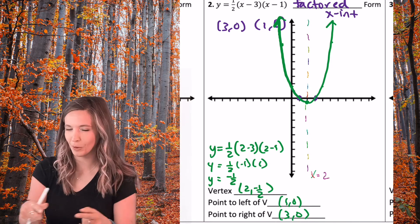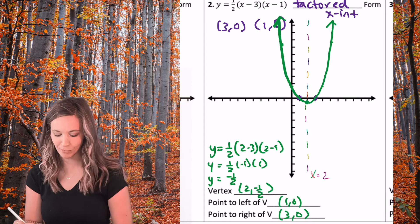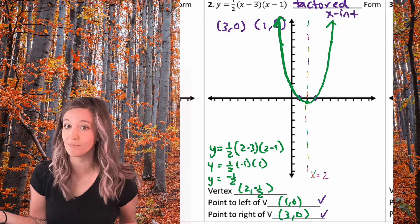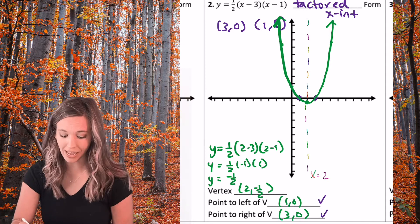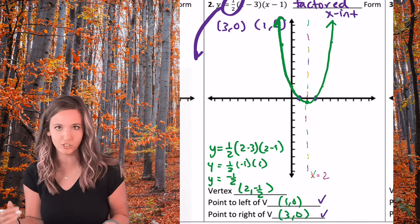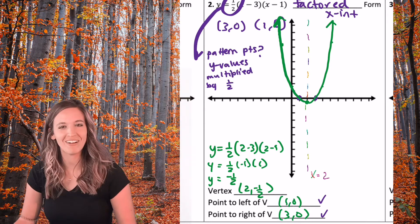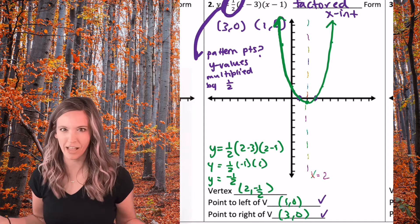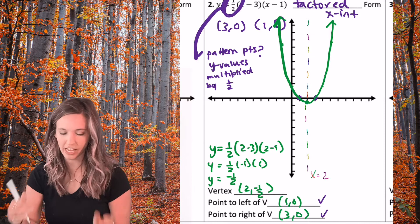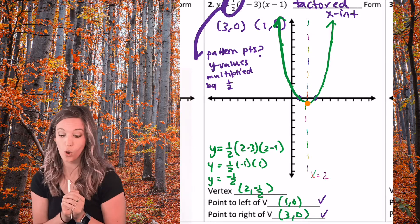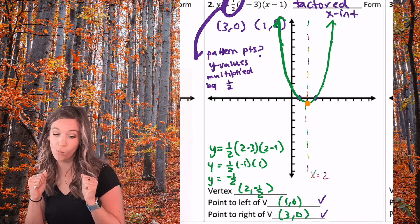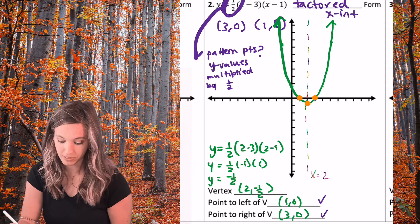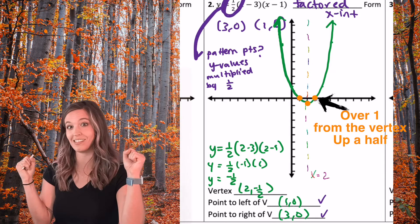Sometimes extra points help make the sketch more precise. My point to the left of my vertex was the x-intercept (1, 0); to the right was (3, 0). Checking with pattern points: y-values are multiplied by a factor of one half due to the vertical compression. From the vertex, over 1 up one half — and that's exactly what happened here: over 1 up a half on both sides to get those x-intercepts.